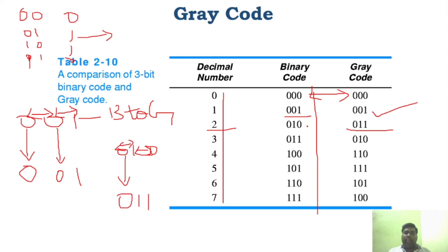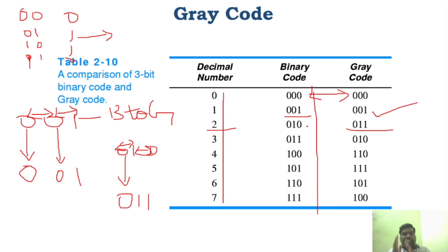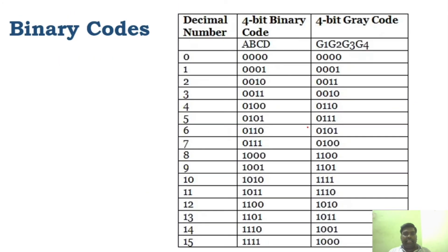Similarly, you can convert any binary number to grey code. All you have to do is: keep the first MSB the same, then XOR the second and first bits to get the second grey bit, XOR the third and second bits to get the third grey bit, XOR the fourth and third bits to get the fourth grey bit, and so on.